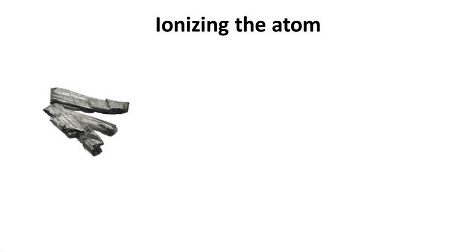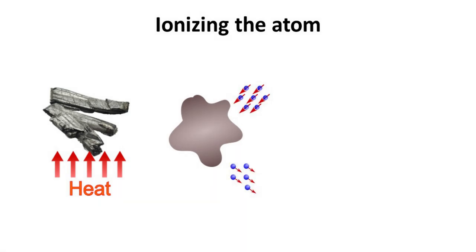Imagine you have a piece of calcium in the solid state. Heating up this piece of calcium to a critical temperature makes it transition to a gaseous state where the calcium atoms are free to move around. Then, hitting the calcium gas with a beam of high energy electrons will knock one or two electrons off the valence shell of each calcium atom, thus ionizing it.